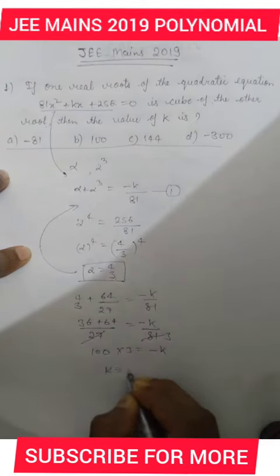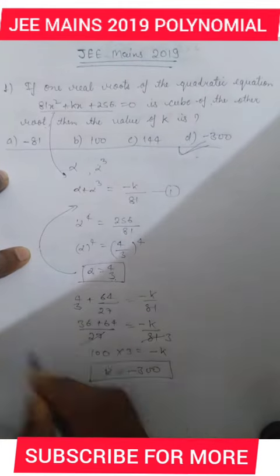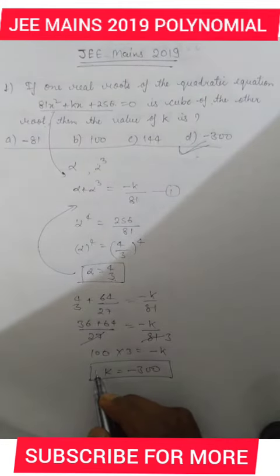The value of k is -300. So this is your answer, the right answer. I hope if you like such videos, please subscribe to the channel and press the bell icon. Thanks for watching.